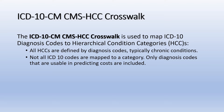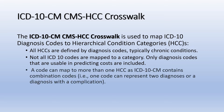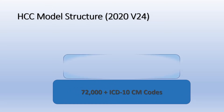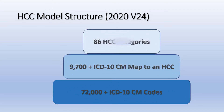Only diagnosis codes that are usable in predicting costs are included. A code can map to more than one HCC, as ICD-10-CM contains combination codes — one code can represent two diagnoses or a diagnosis with a complication. Diagnoses are grouped into condition categories with similar Medicare-predicted expenditures and those that are clinically related. In CMS-HCC model V24 (2020), there are almost 9,700 ICD-10-CM codes that map to one or more of the 86 HCC codes — roughly 13% of all ICD-10-CM codes.